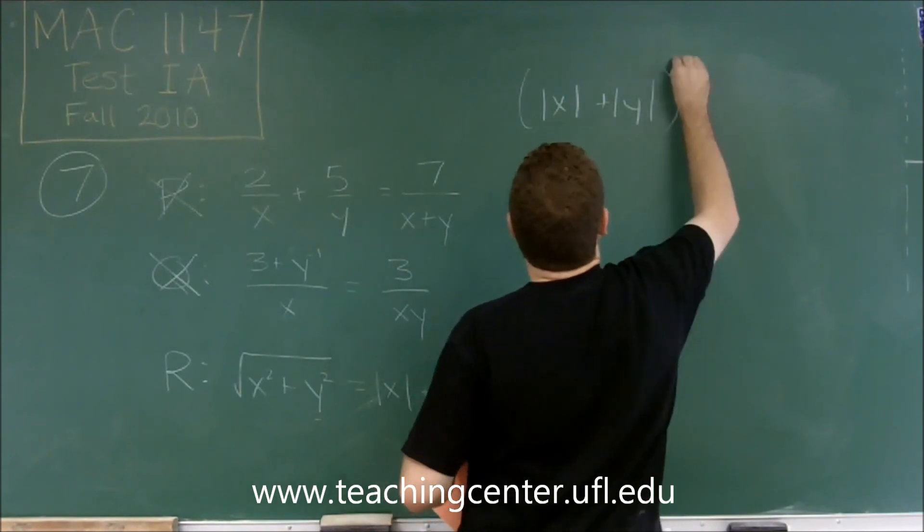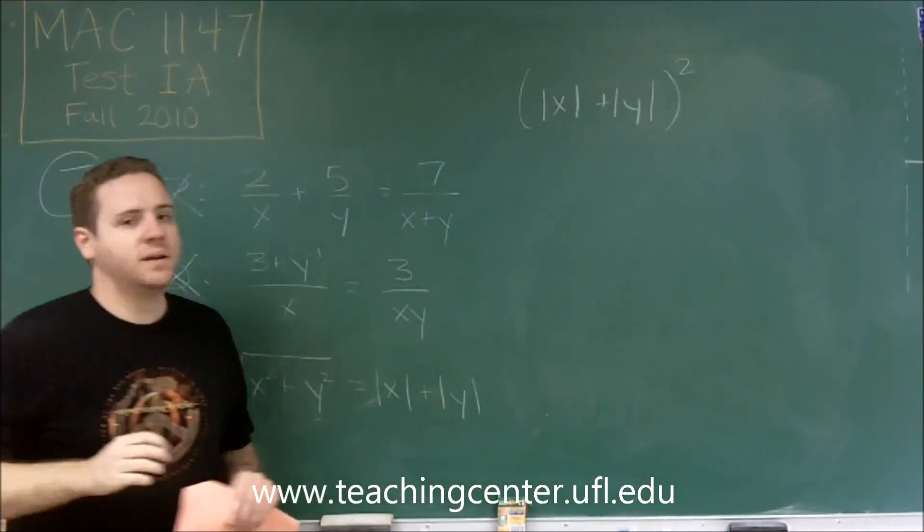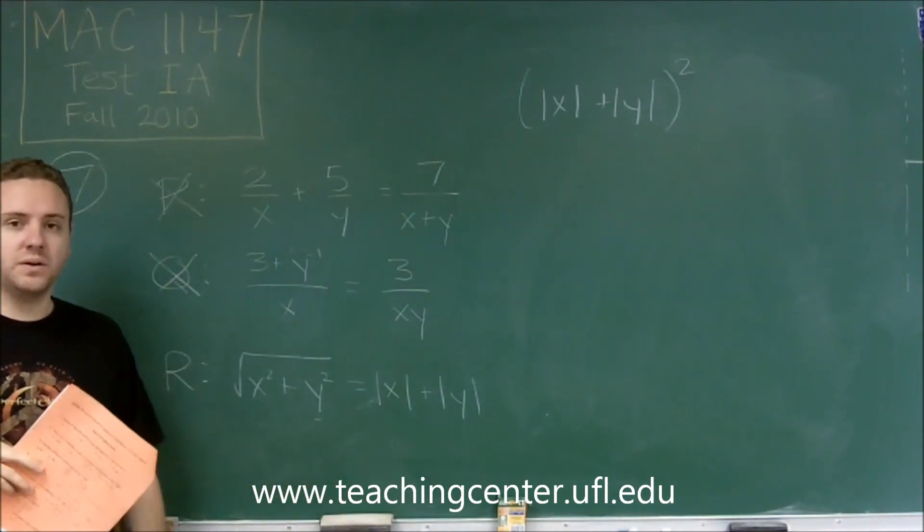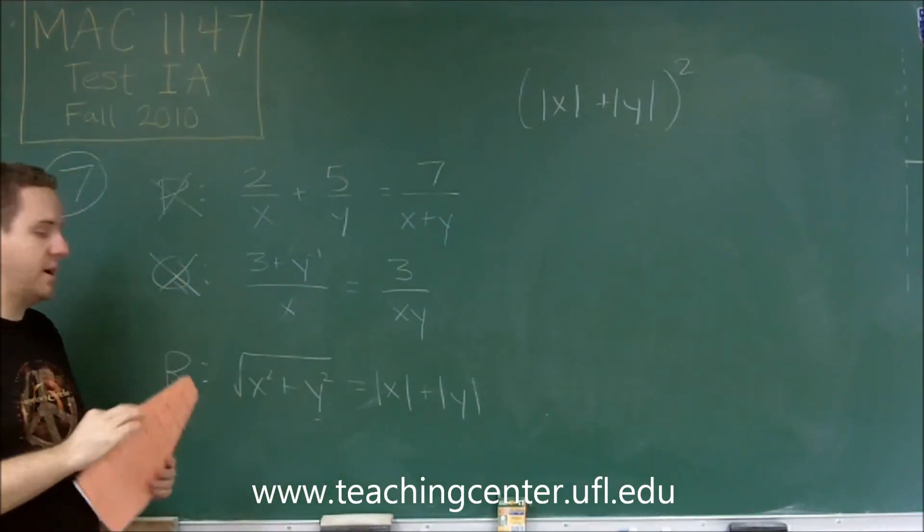if you were to square that, you'd have to foil it and you would get middle terms. You wouldn't just get x squared and y squared. So this is definitely incorrect also.